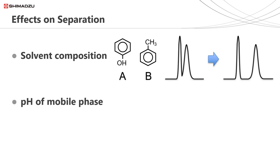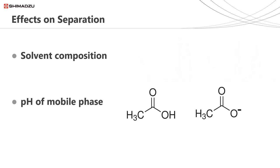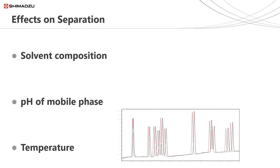We also looked at the effect of pH. Depending on the pH of the mobile phase, analytes will be in their charged or neutral state, which can affect peak shape and retention. We also looked at temperature, showing the importance of keeping temperature constant for good repeatability.